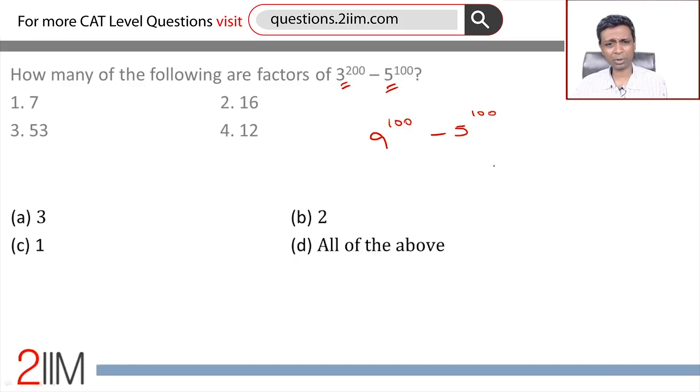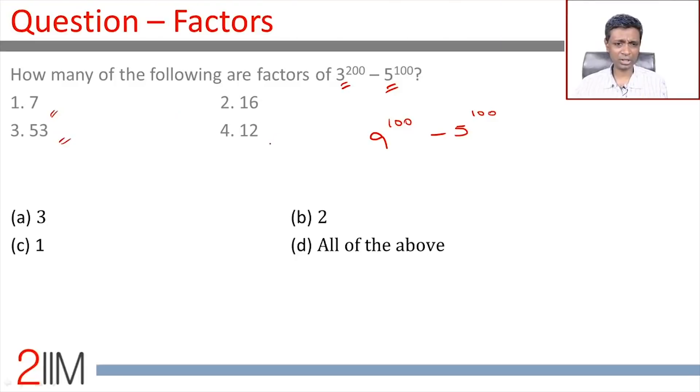That does not give us much because these numbers are 7, 53, 12, 16, not 4 or 2 or 3, not simple numbers.